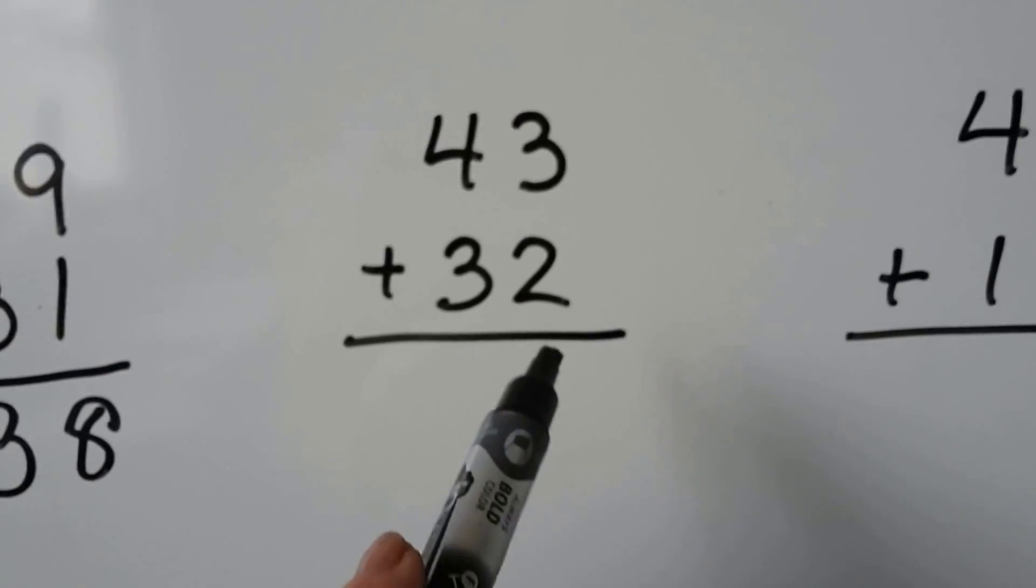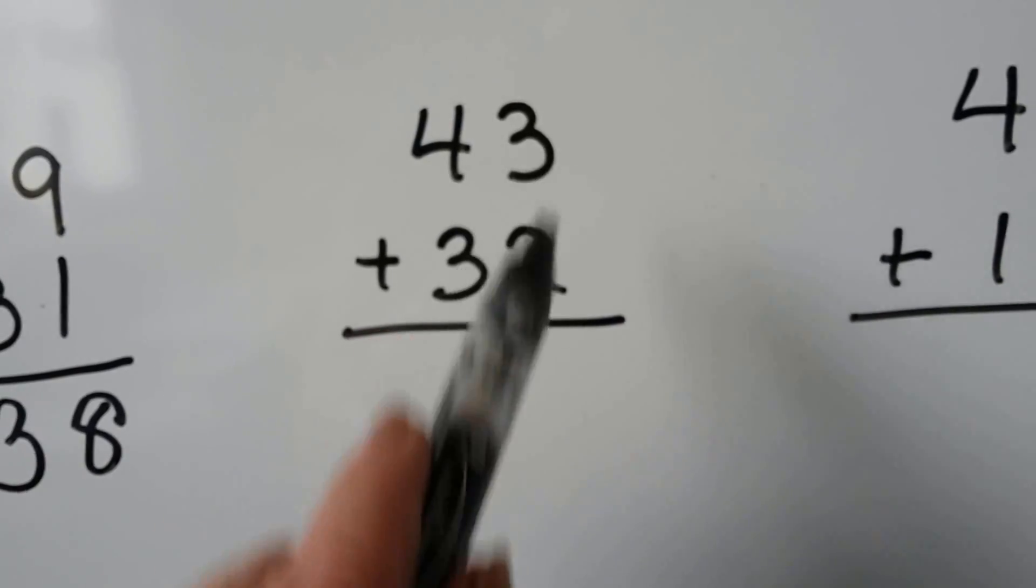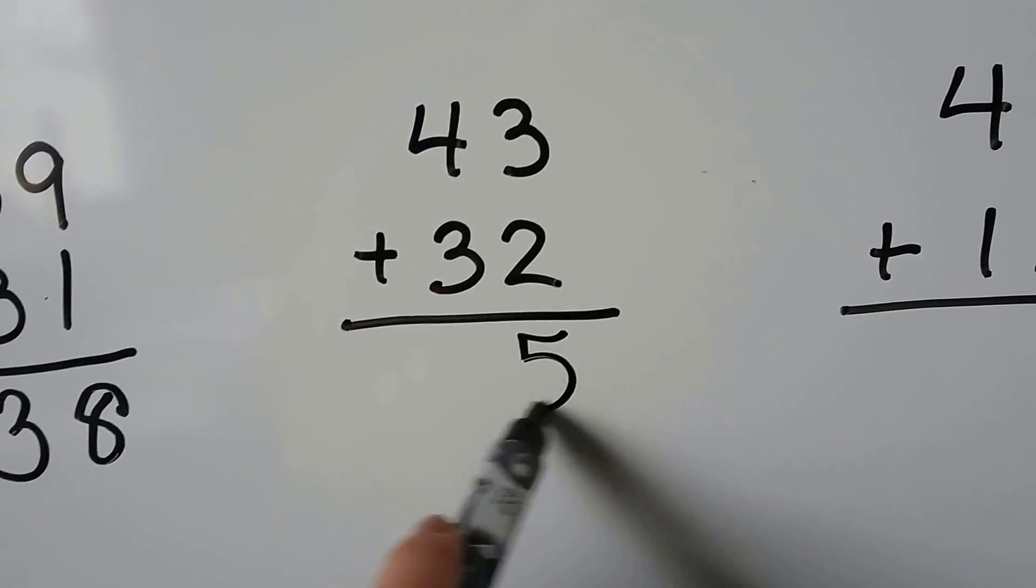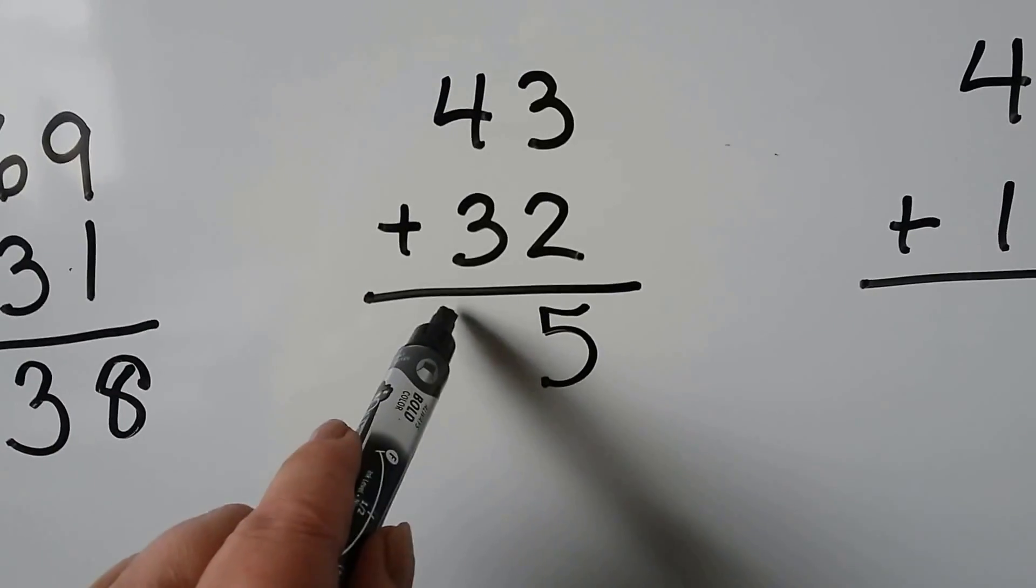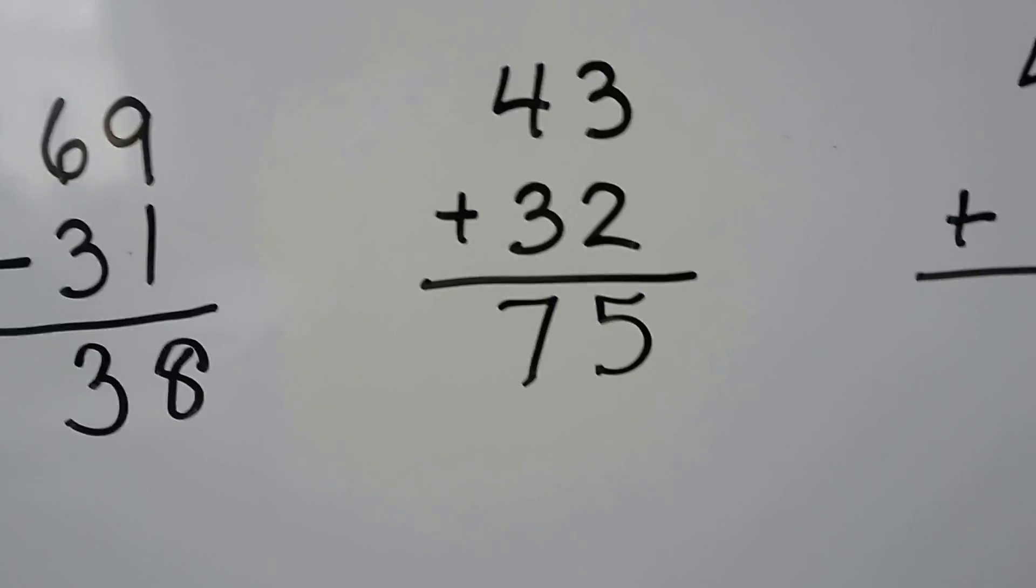We start with the 1s. We add the 2 1s and the 3 1s. That makes 5 1s. Then we move to the 10s place. 4 plus 3 is equal to 7. It's equal to 75.